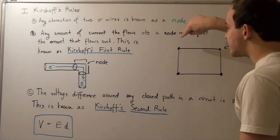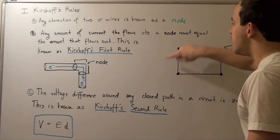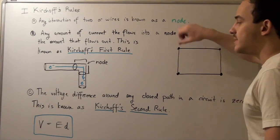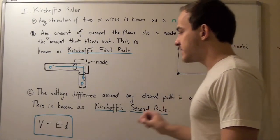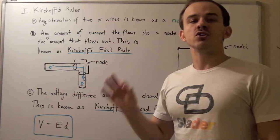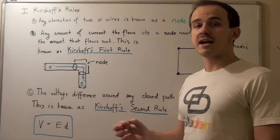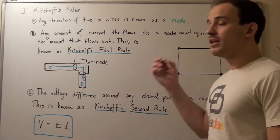Right? Because we start from here and we end here, our displacement is zero. And that means our voltage is also zero. That's exactly what Kirchhoff's second rule tells us.